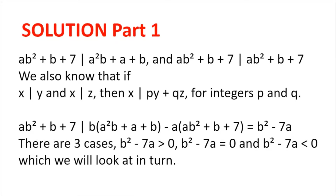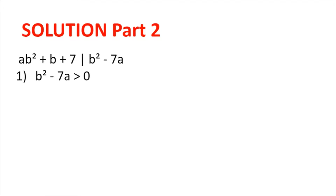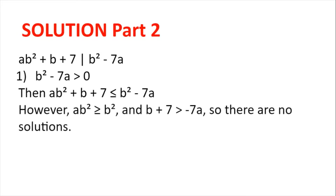We arrive at three cases. First, when b² − 7a is greater than 0: then ab² + b + 7 is less than or equal to b² − 7a, since it is a factor of b² − 7a. But ab² ≥ b² because a is a positive integer, and b + 7 > −7a because a and b are positive integers. So the left-hand side is greater than the right-hand side — a contradiction — and so there are no solutions in this case.